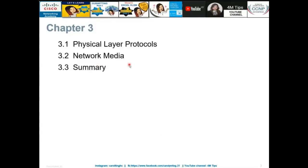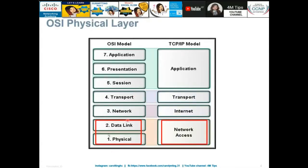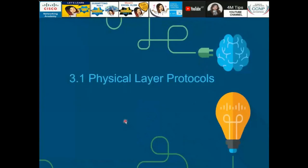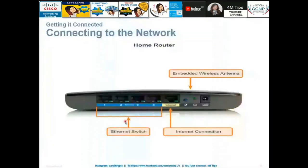Three things we're going to learn today: first, physical layer protocol; second, network media; and third, a summary of what we have learned. Network Access is the TCP/IP term, but in the OSI model it corresponds to the physical and data link layers.